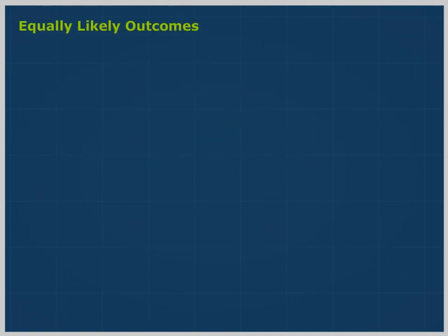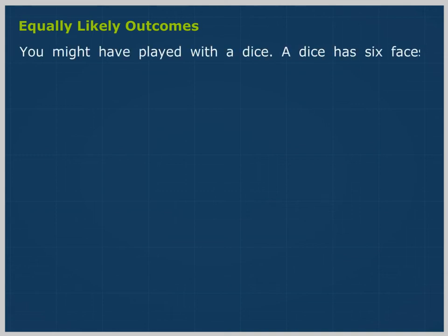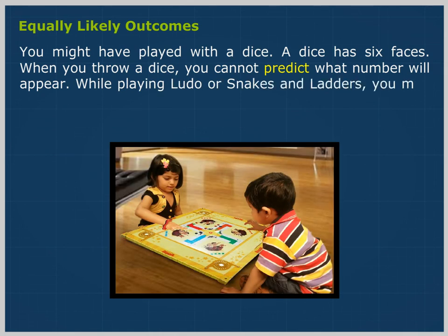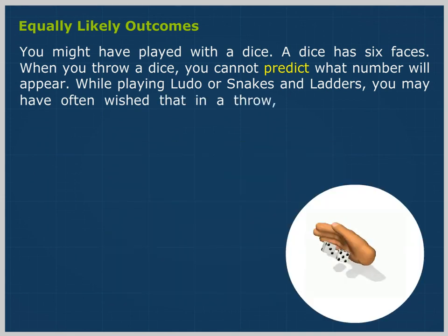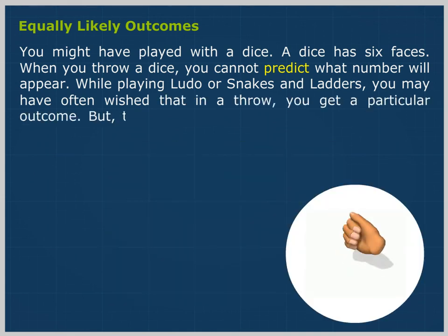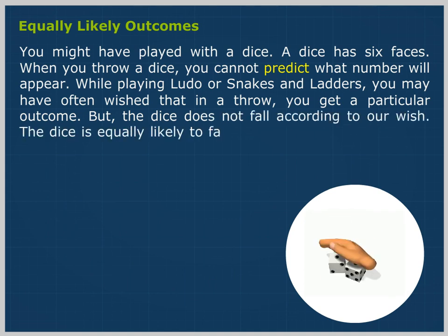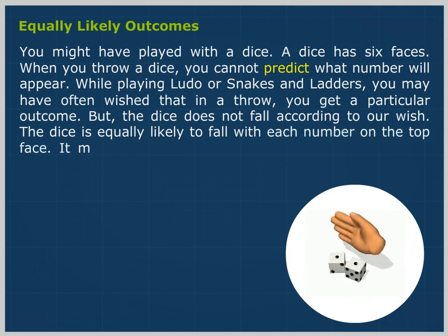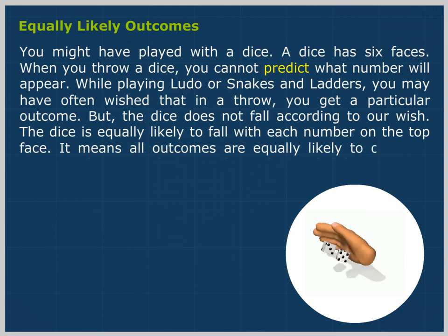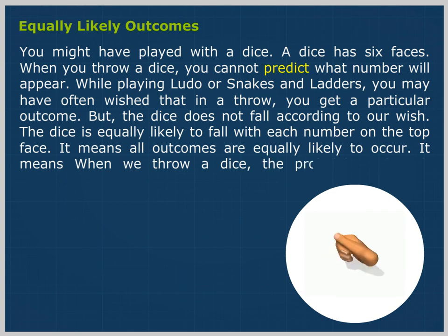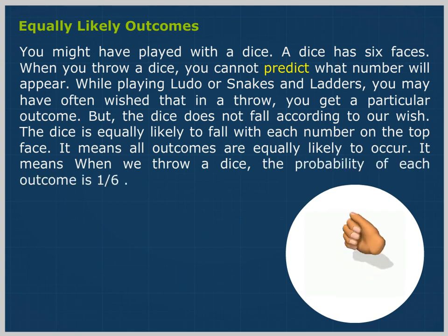Equally likely outcomes. You might have played with a dice. A dice has six faces. When you throw a dice, you cannot predict what number will appear. While playing Ludo or Snakes and Ladders, you may have often wished that in a throw you get a particular outcome, but the dice does not fall according to our wish. The dice is equally likely to fall with each number on the top face — it means all outcomes are equally likely to occur. When we throw a dice, the probability of each outcome is 1 upon 6, meaning one time out of 6 times.